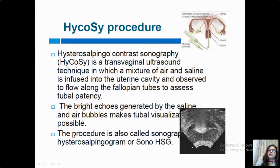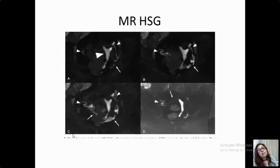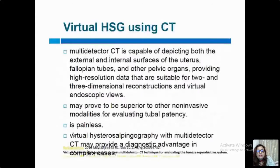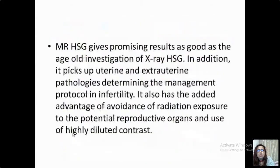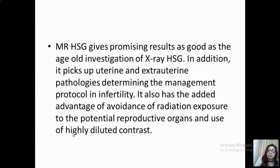Coming to other modalities: MR-HSG involves injection of MR contrast after which the patient is taken inside the MR room for scanning of the uterus and ovaries. This is a good procedure but very tedious and studies are still ongoing. It is not much used in India, but it is giving promising results equivalent to x-ray HSG. In addition, it picks up uterine and extra-uterine pathologies, determining the management protocol in infertility. An added advantage is avoidance of irradiation exposure.